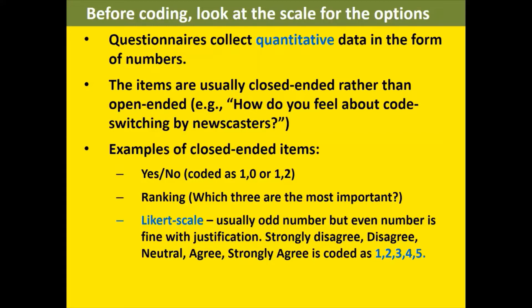Why seven or nine options? It is like camera resolution — more options give finer detail in responses, but seven options make it more difficult for people to make their choices. For more educated respondents you can give seven options, but for less educated respondents, five options are already challenging. There are many such considerations. If you have chosen five options, you will code them as 1, 2, 3, 4, 5.